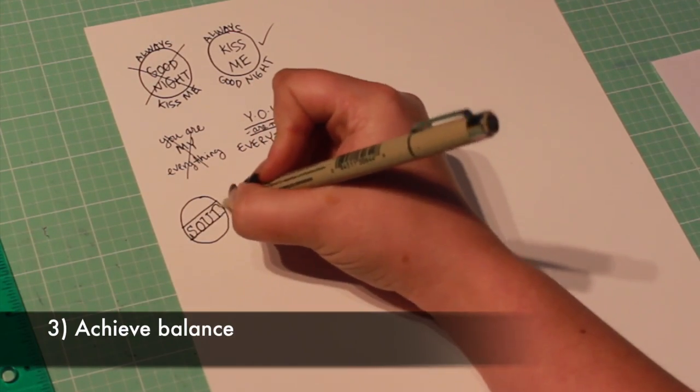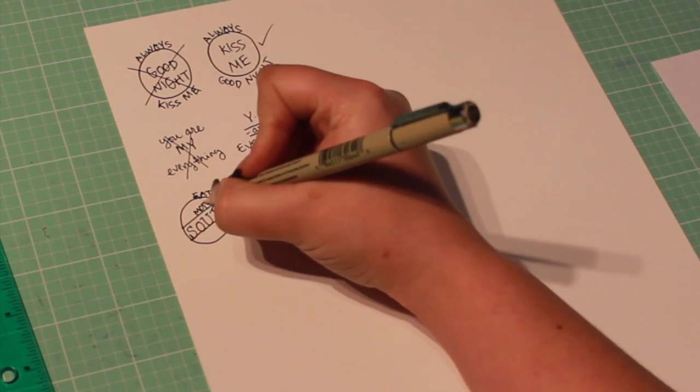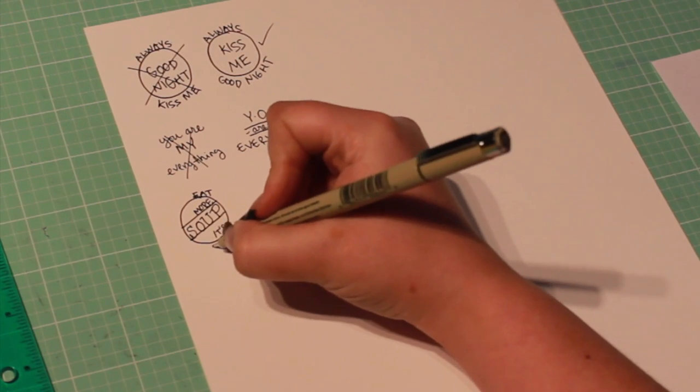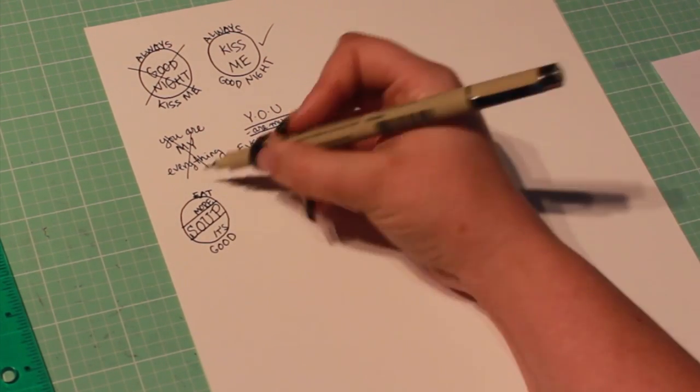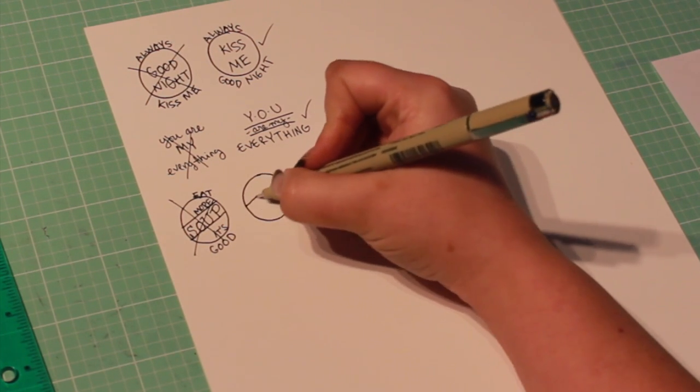Third, try to achieve balance in your design. It doesn't have to be symmetrical, but it shouldn't feel lopsided. This first sketch is heavily weighted on the right, while the second sketch distributes the elements more evenly.